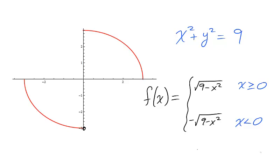We could take the piecewise function f, which gives the top of the circle when x is not negative, and the bottom of the circle when x is negative.